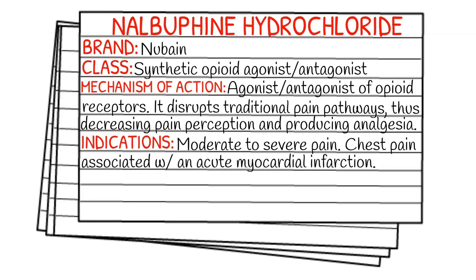Today's medication is called Nalbufine Hydrochloride, also known by its brand name Nubain. It falls under the class of synthetic opioid agonists and synthetic opioid antagonists. Its mechanism of action is that it antagonizes and agonizes opioid receptors, disrupts the traditional pain pathways, decreases pain perception, and produces analgesia.